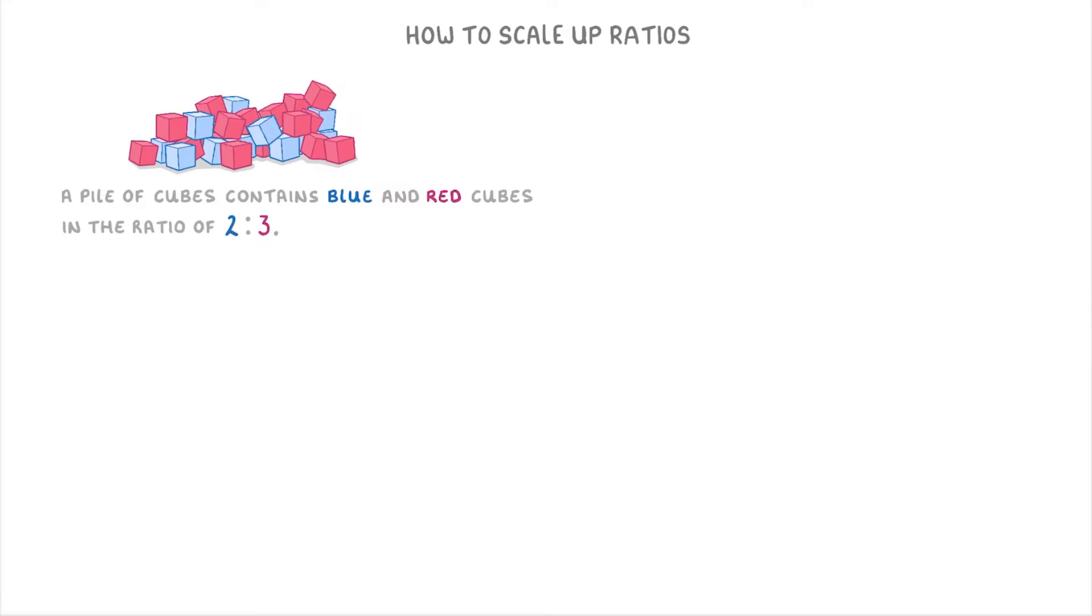Now when it comes to exams, what they'll normally do is only give you one of the scaled up values and get you to work out the other one. For example, they could ask: a pile of cubes contains blue and red cubes in the ratio of 2 to 3. If there are 10 blue cubes, how many red cubes will there be?